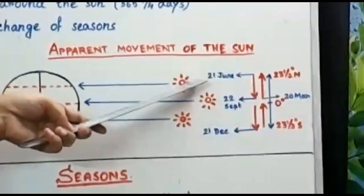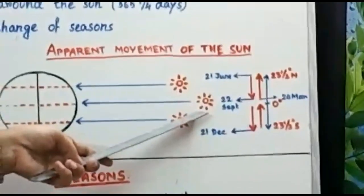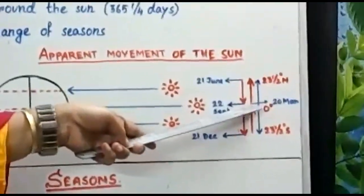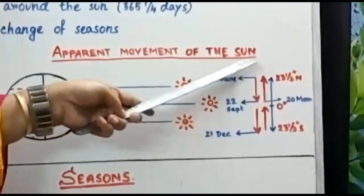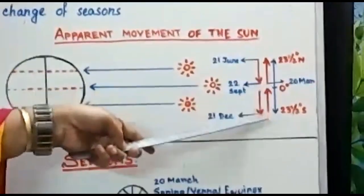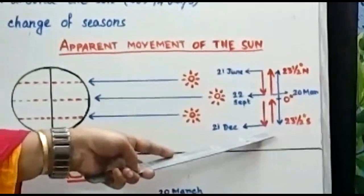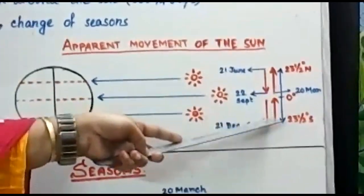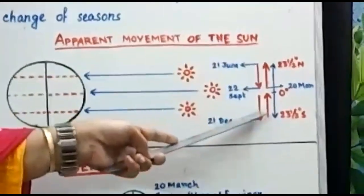The sun starts its journey from zero degrees, moves to the Tropic of Cancer, and it takes three months. Again it comes back to the equator — as I have shown with the arrow here. First journey: it starts from the equator, moves to 23.5 degrees north, then comes back to the equator in three months. Again it moves towards the south, reaches 23.5 degrees south in three months, and returns to the equator in another three months. So this is the total 12-month classification.